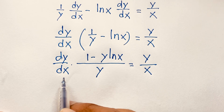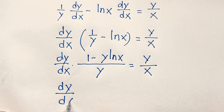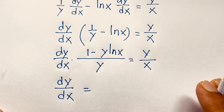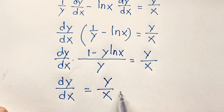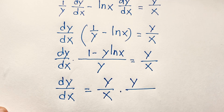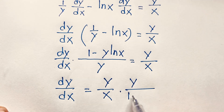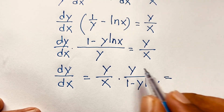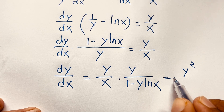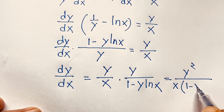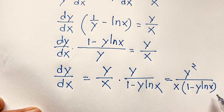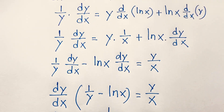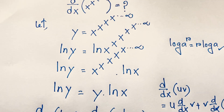Now solving for dy/dx: we multiply both sides appropriately, giving dy/dx equals y squared divided by x times (1 minus y ln x). This is our final answer for this calculus problem. Thank you all — if you enjoyed this math problem, this is the Uskama channel. See you in other interesting videos. Goodbye, take care everyone!